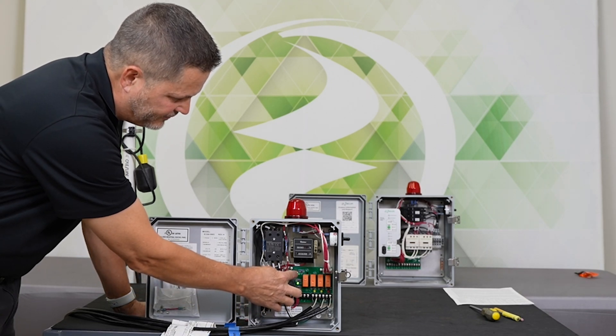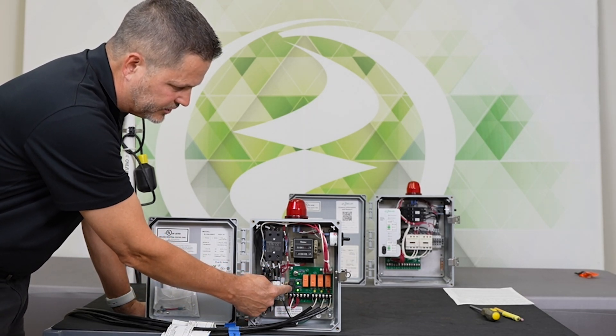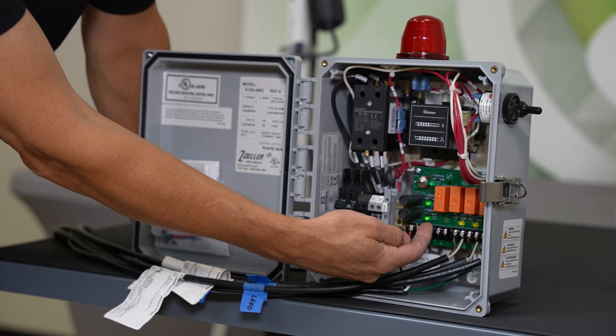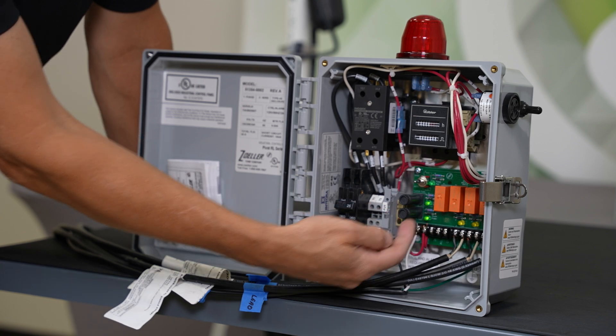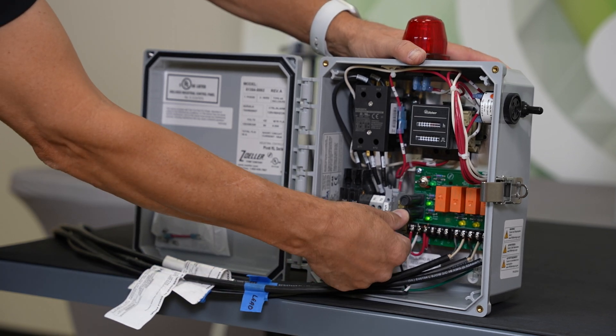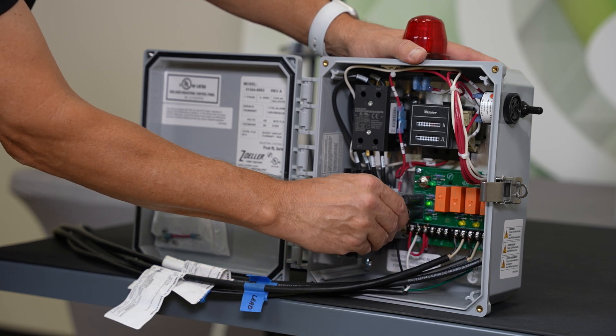Right below the handoff auto, we have our two fuses, control circuit and alarm circuit. Next to the fuses, we have alarm power LED and a control power LED. So if I were to remove an alarm fuse, you can see that LED goes out.